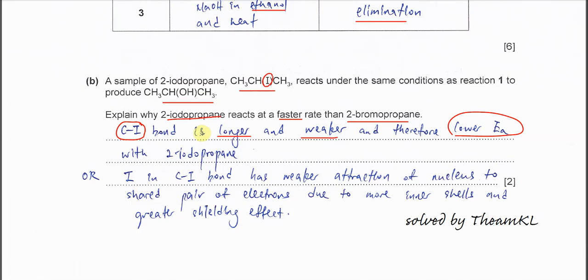Lower EA is because the bond length is longer and the bond strength is weaker, easy to break.